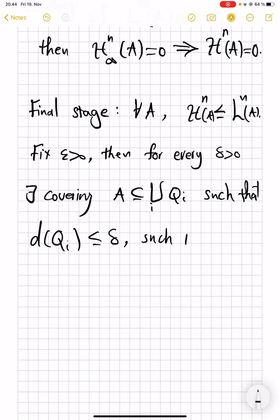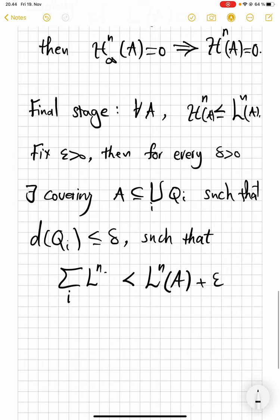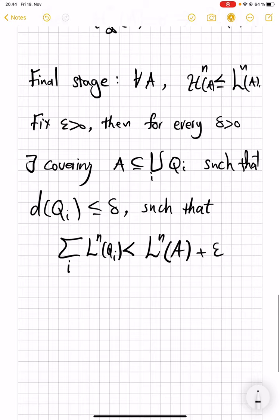Okay, so there is a covering such that L^n is almost achieved. So L^n, this is actually a copy of what we did above. No equality, summation over i of L^n of Q_i. Okay, now comes another fact, which we use without proof.